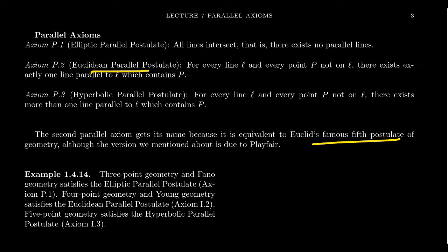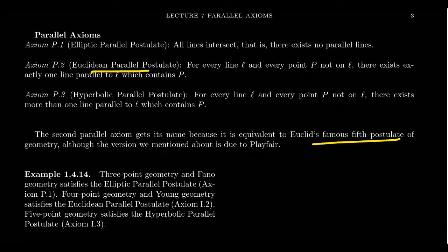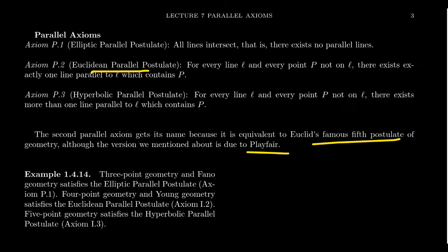You could take Euclid's first four postulates and attach the elliptic parallel postulate or the hyperbolic parallel postulate — filling in the gaps Euclid left — and adopt a different fifth postulate to get a consistent geometry. This version of the Euclidean parallel postulate was not actually how Euclid wrote it; this version is actually due to Playfair. Euclid's fifth postulate is expressed a little differently, and we'll talk about that in a future lecture.